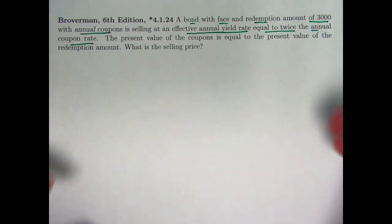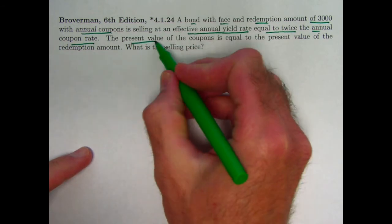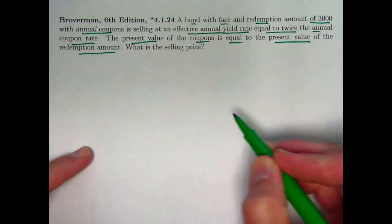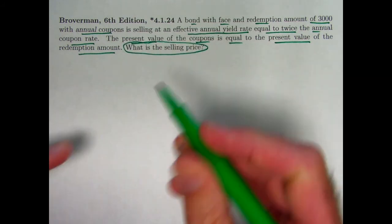R over J is going to be a constant. The present value of the coupons is equal to the present value of the redemption amount. The goal is to find the selling price.